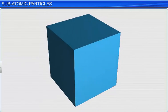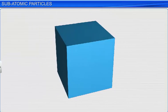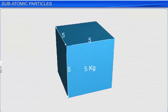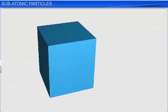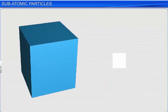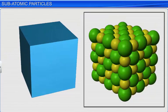Any substance that has mass and occupies space is called matter. It is made up of small particles called atoms that cannot be further divided.